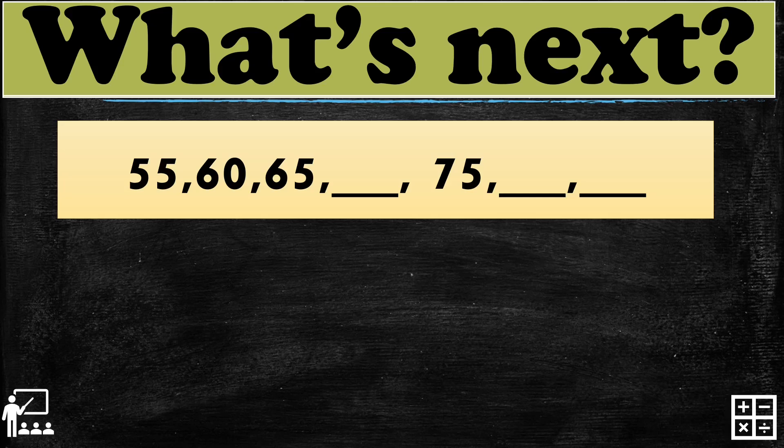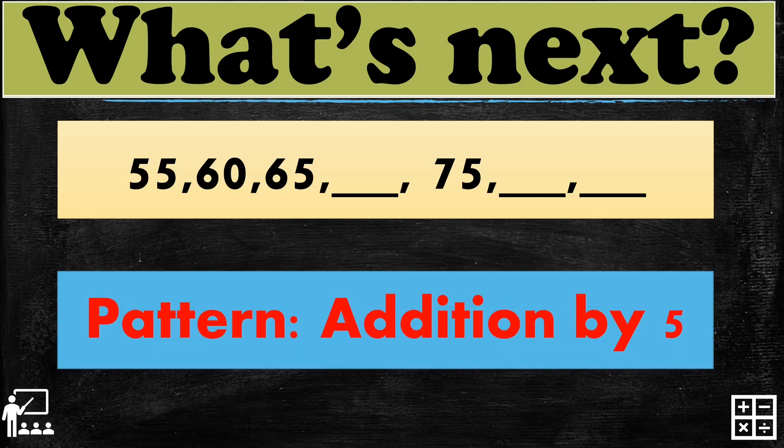Let's try another: 55, 60, 65, blank, 75, and the two next numbers. What do you think are the three missing numbers? The pattern for this sequence is addition by 5. If you add 5 to 65, it gives you 70, so the next number after 65 is 70. Then 70 plus 5 gives you 75, and the next after 75 is 80.